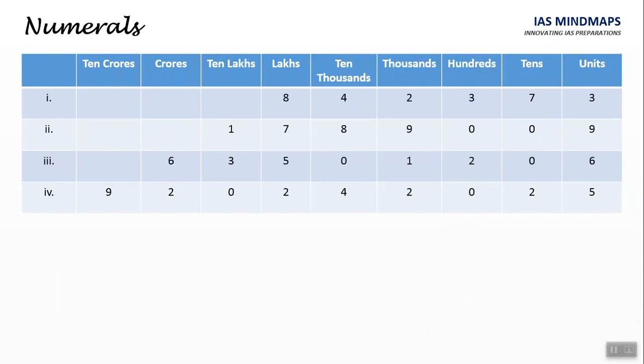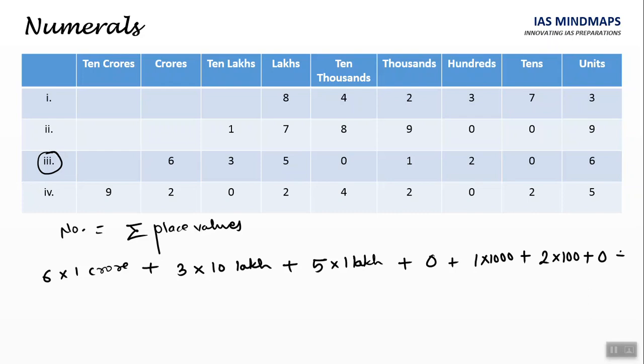Now let's try this example. We will try to make number from this. For making number, we need to add all the place values. Here we have 6 into 1 crore, plus 3 into 10 lakh, plus 5 into 1 lakh, plus 0, plus 1 into 1000, plus 2 into 100, plus 0, plus 6.